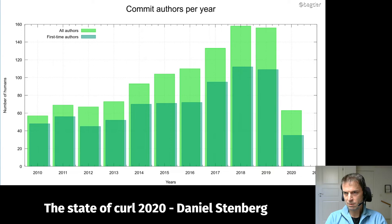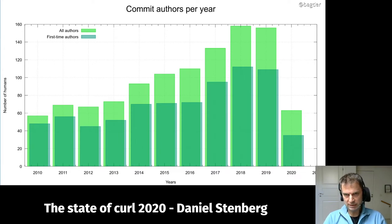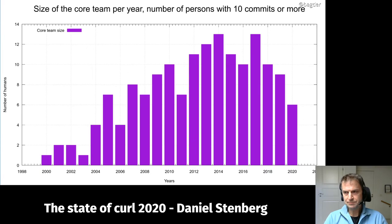What I think is most positive is the darker green portion — first-time authors. Last year alone we had over 100 first-time authors in the project. 2018 also had over 100, and we're already approaching 40 first-time commit authors in 2020. There's still a steady stream of first-timers and that's really the good news. These are people actually writing commits — rolling up their sleeves, submitting pull requests, and getting stuff merged.